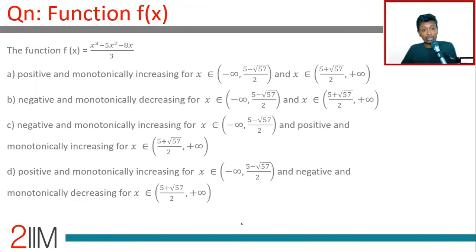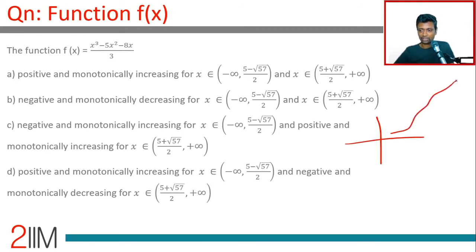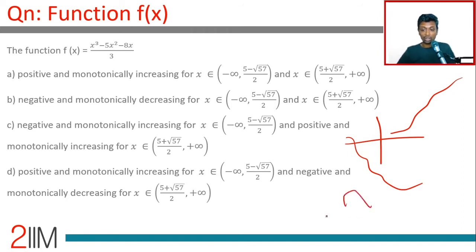f of x equals x cubed minus 5x squared minus 8x by 3. Is it positive and monotonically increasing, negative and monotonically increasing, or positive and monotonically decreasing? Monotonically increasing means continuously increasing — a curve that only goes up. Monotonically decreasing means continuously decreasing. A curve that both increases and decreases will not be called monotonically increasing or decreasing. Continuously increasing is monotonically increasing; continuously decreasing is monotonically decreasing.